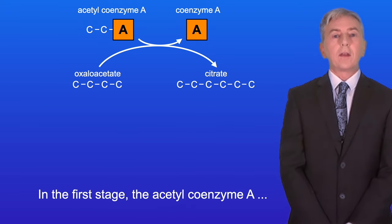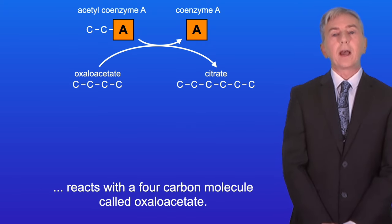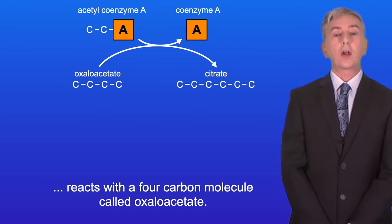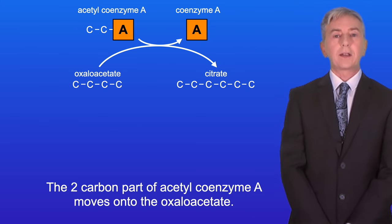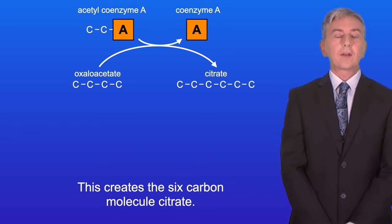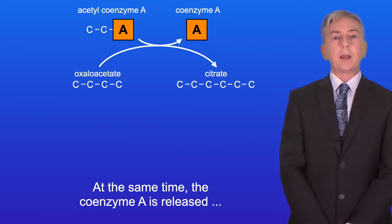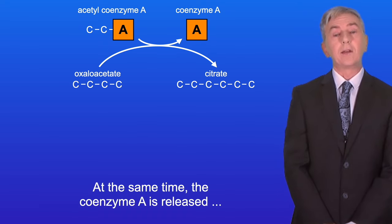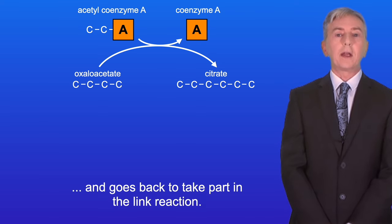In the first stage the acetyl coenzyme A reacts with a four carbon molecule called oxaloacetate. The two carbon part of acetyl coenzyme A moves onto the oxaloacetate. This creates the six carbon molecule citrate. At the same time the coenzyme A is released and goes back to take part in the link reaction.